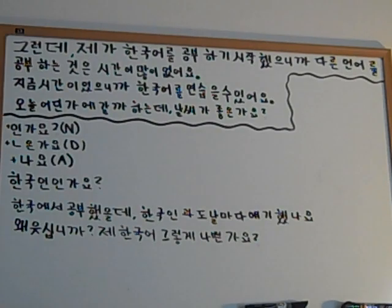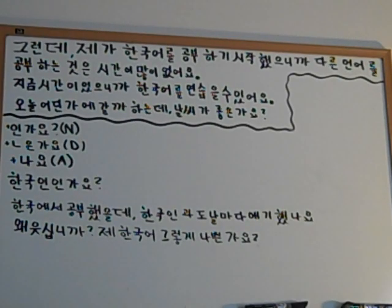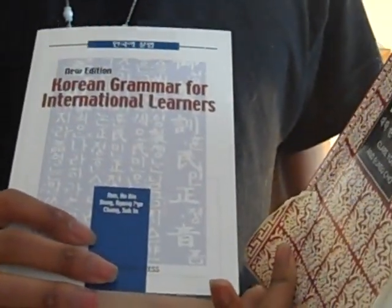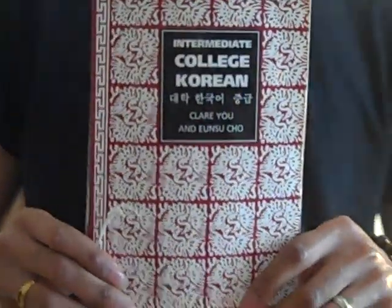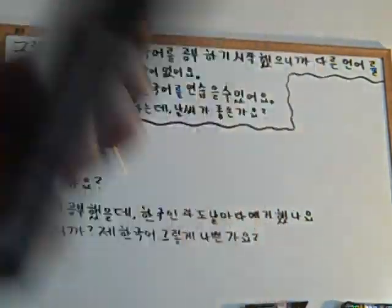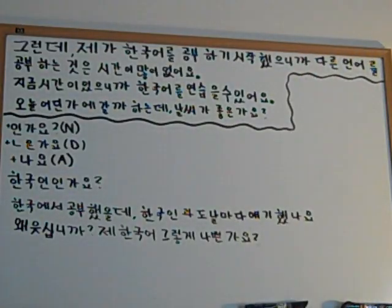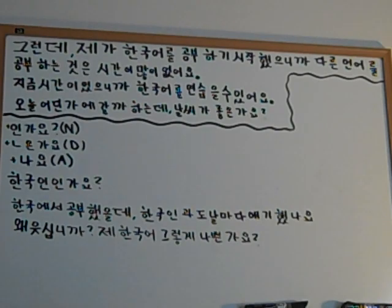But these two books I had mentioned — the first is 'Korean Grammar for International Learners,' a very good book, I'll post a link where you can get this, highly recommend it. Then this 'Intermediate College Korean' book — I will say go through 'Teach Yourself Korean' first and then get this. They explain grammar really well. Now I'm going to show you on a marker board some examples.